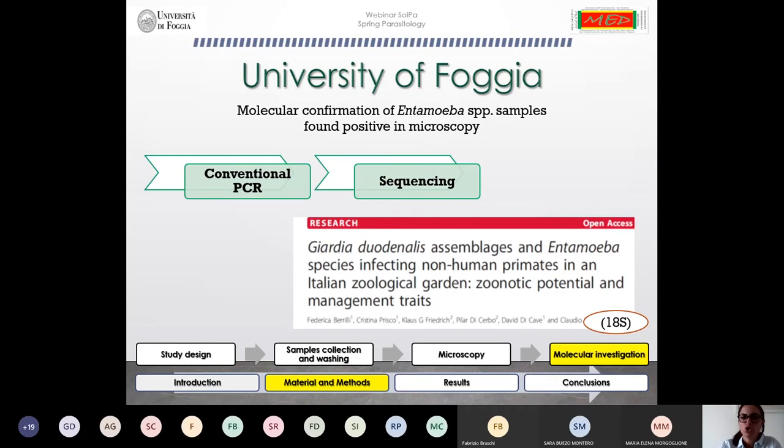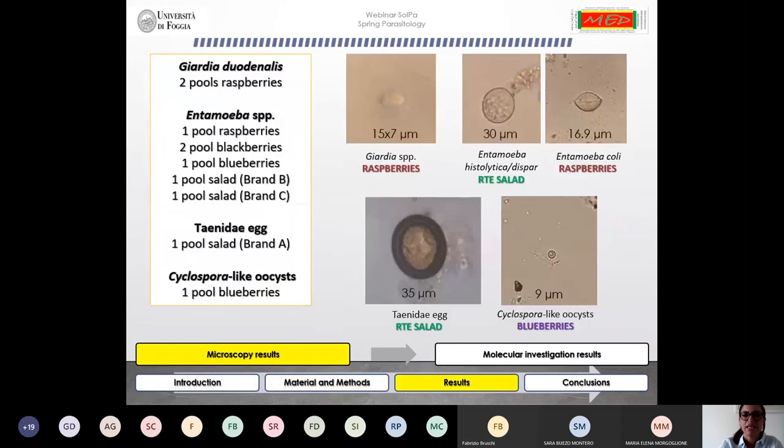Finally, in our lab, we molecularly confirmed the Entamoeba samples that we had found positive in microscopy using a conventional PCR protocol plus sequencing.